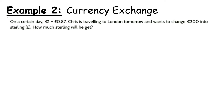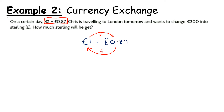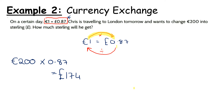Example two: on a certain day, one euro is equal to 0.87 pounds. Chris is travelling to London tomorrow and wants to change 200 euro into sterling. We have 200 euro, so we want to go from euro into pounds — we multiply by 0.87. So 200 multiplied by 0.87 gives us 174 pounds. Double check: are pounds smaller than euro? Yes. These are called pounds sterling.